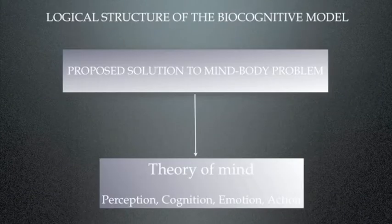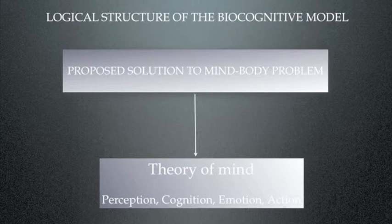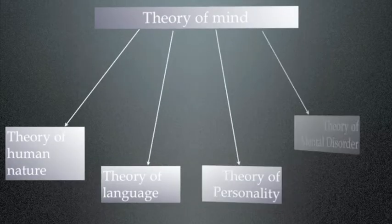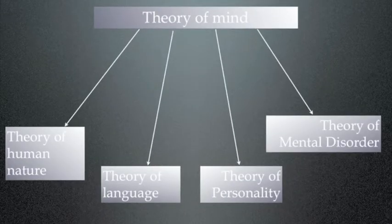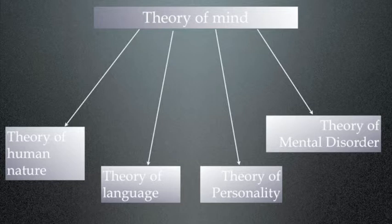Now, from our proposed solution to the mind-body problem goes directly to a theory of mind, which explains perception, cognition, emotion and action. And I can't do that in this talk. All we're doing is indicating the areas that have been developed.